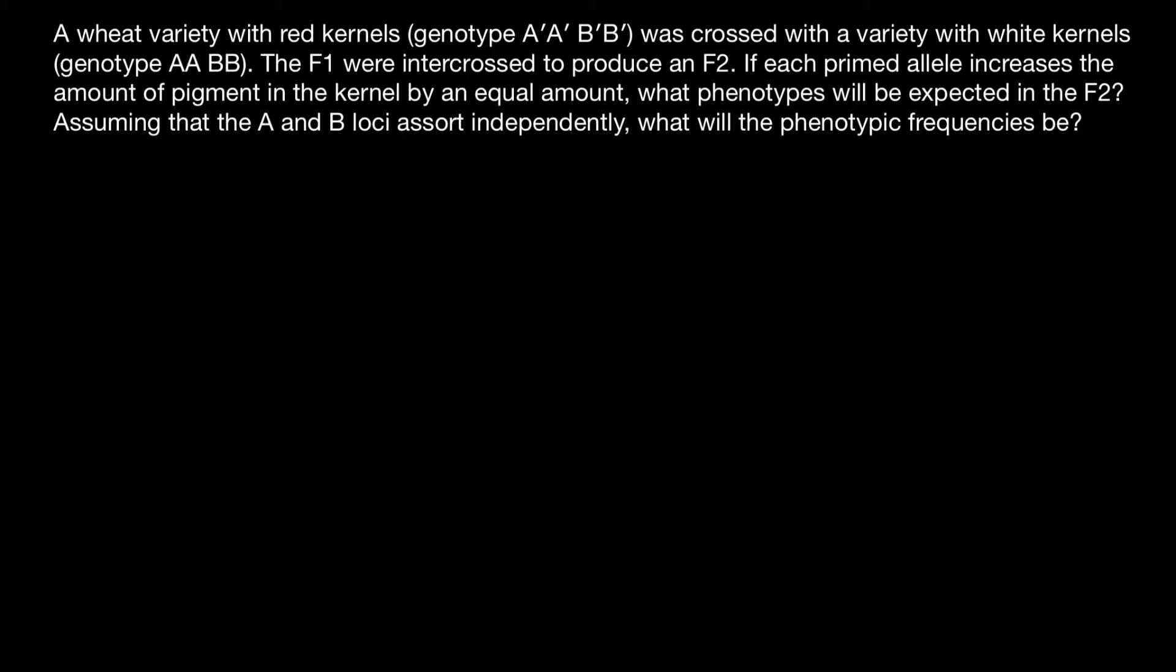Here's a problem: a wheat variety with red kernels, genotype A'A'B'B', was crossed with a variety with white kernels, genotype AABB. The F1 were intercrossed to produce an F2. If each primed allele increases the amount of pigment in the kernel by an equal amount, what phenotypes will be expected in the F2 generation, assuming that the A and B loci sort independently? What will be phenotypic frequencies?